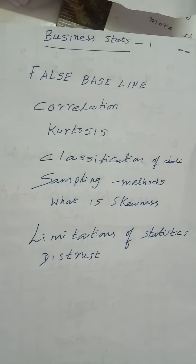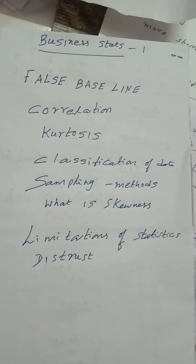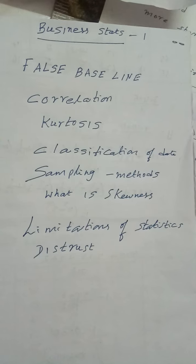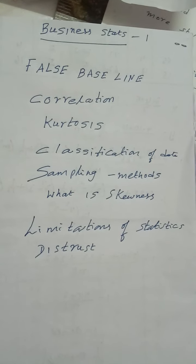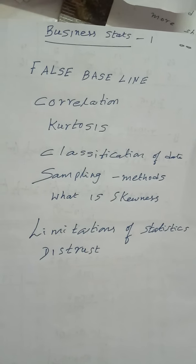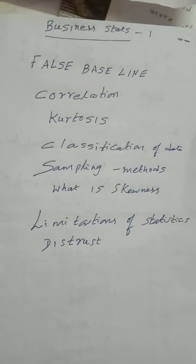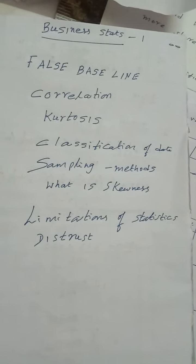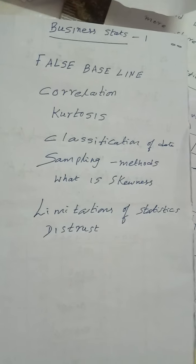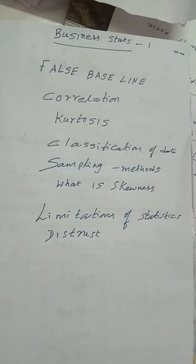The formula is Q3 plus Q1 minus 2 into median by Q3 minus Q1. Okay. I am telling you again and again, when mid values are given, we have to make changes in X class. See it clearly.